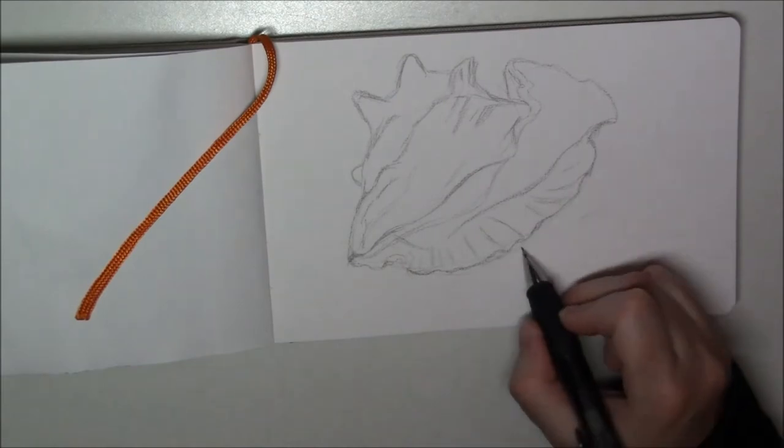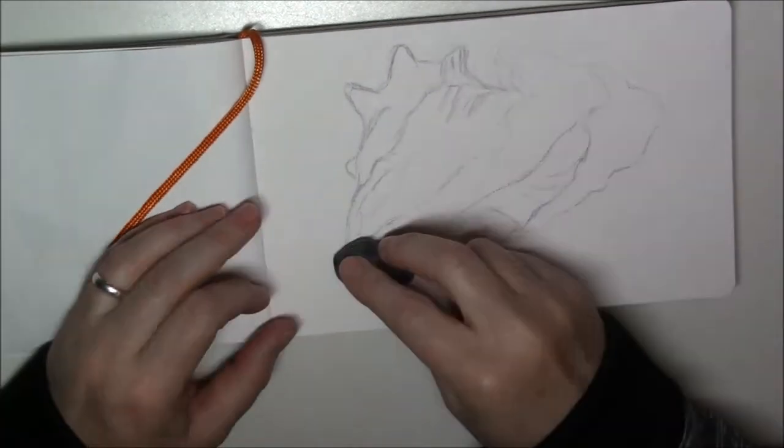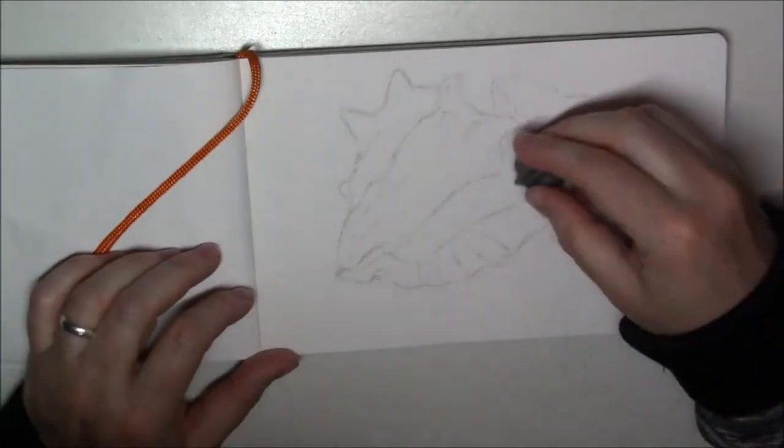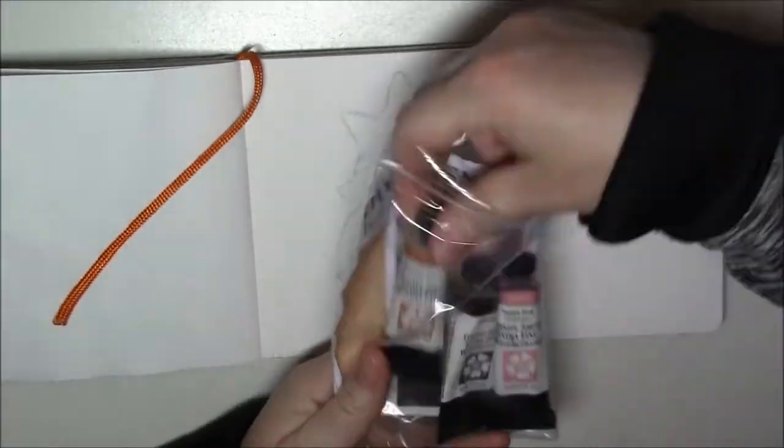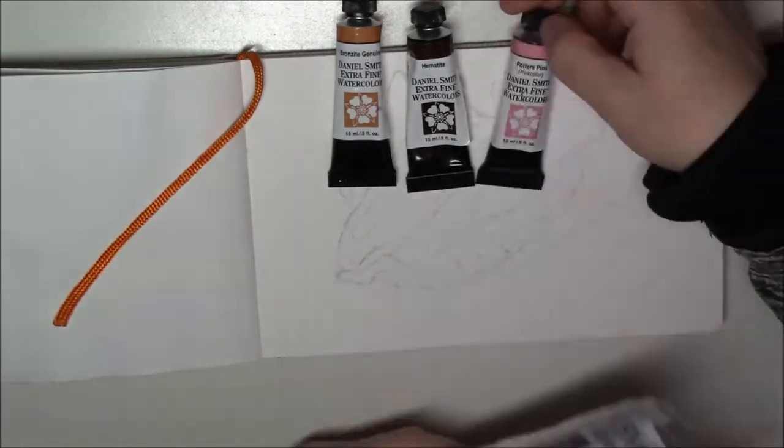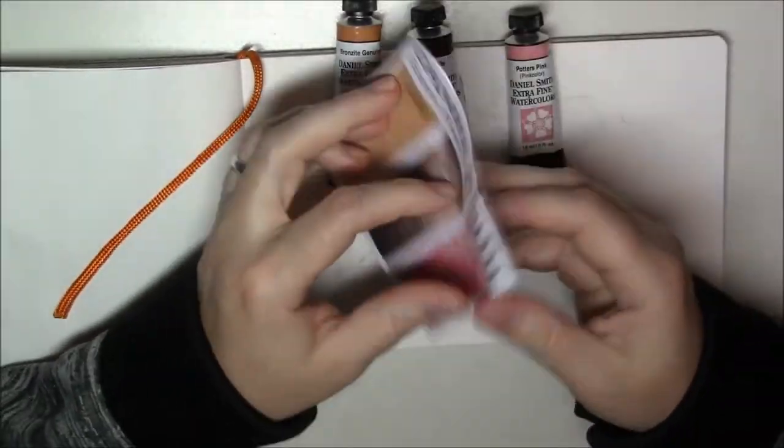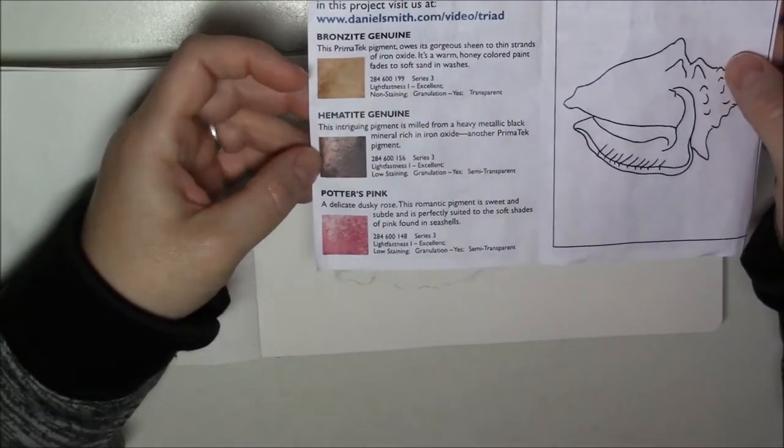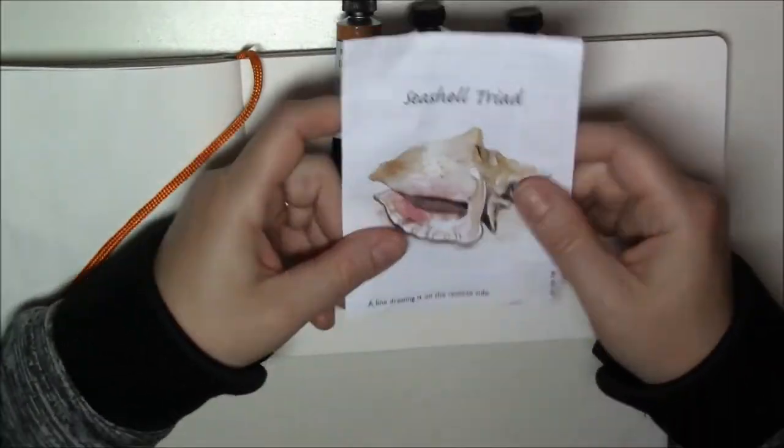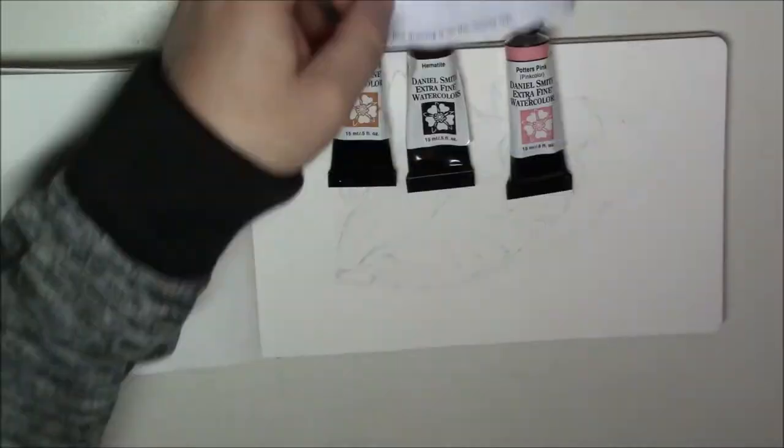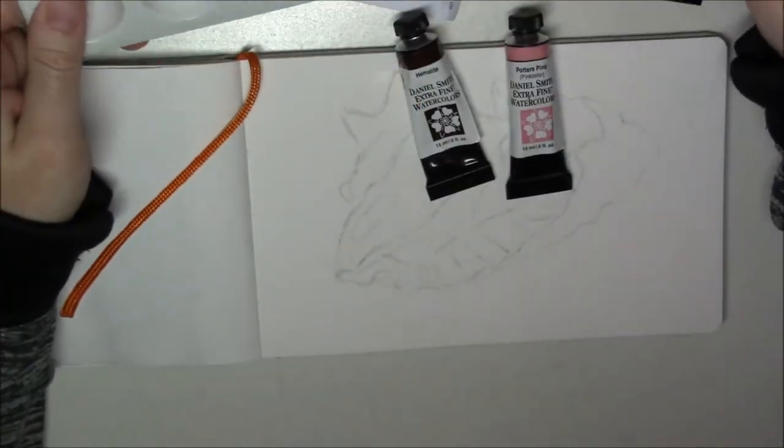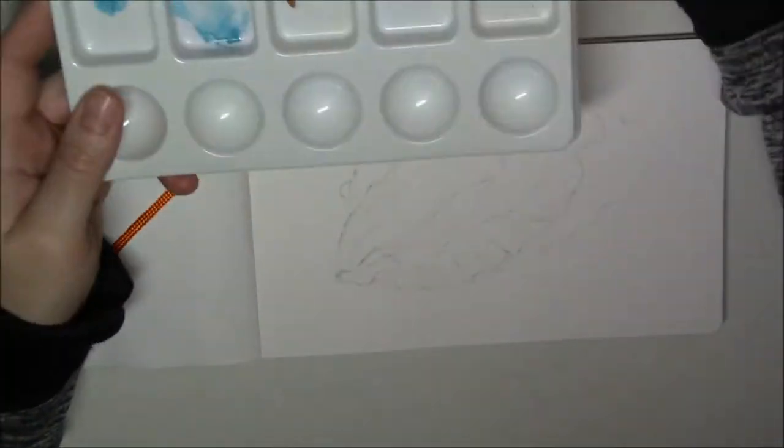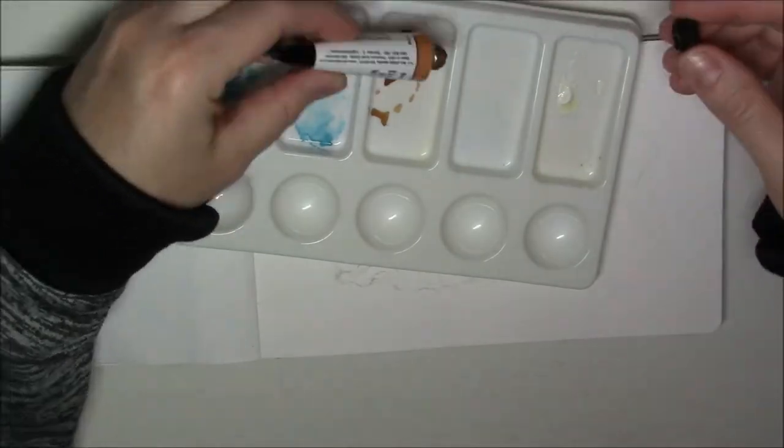For the triad I'm trying today, I've got the bronzite genuine, the hematite genuine, and the potter's pink. The bronzite and hematite are both part of the primatek line, which are made with natural minerals and rocks. All three granulate and are very lightfast. The sample painting they show with this is a shell.